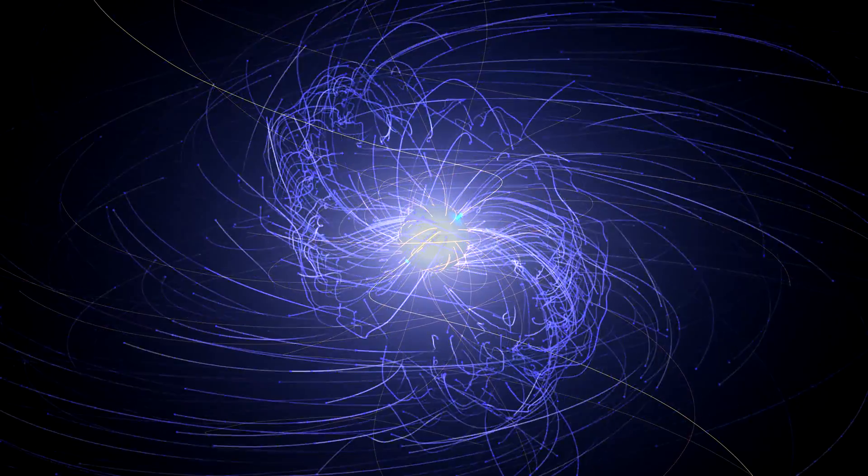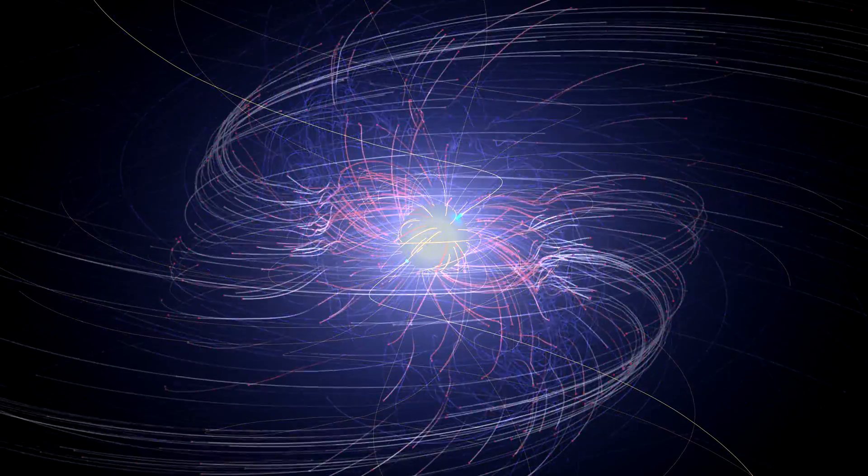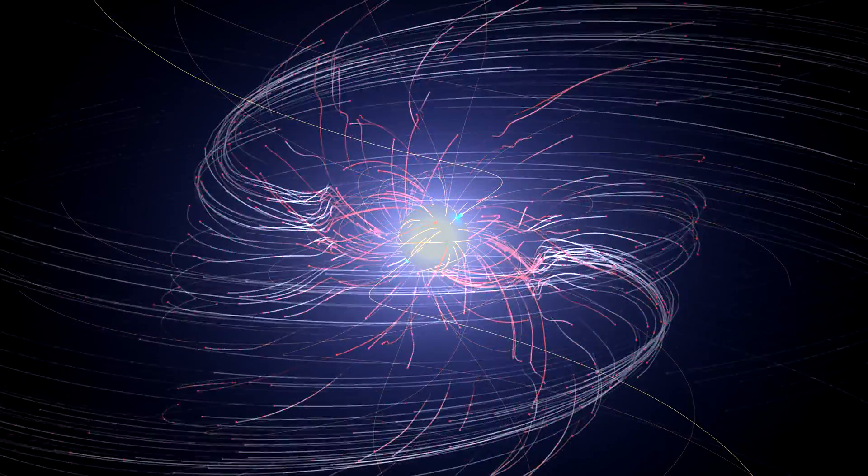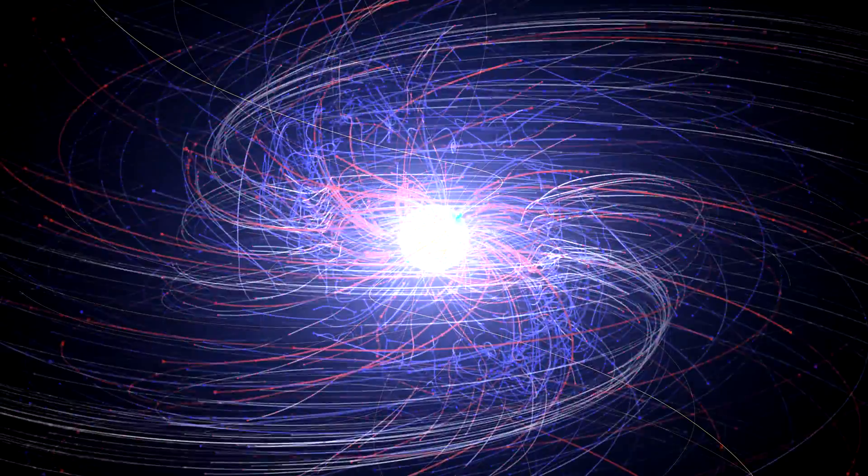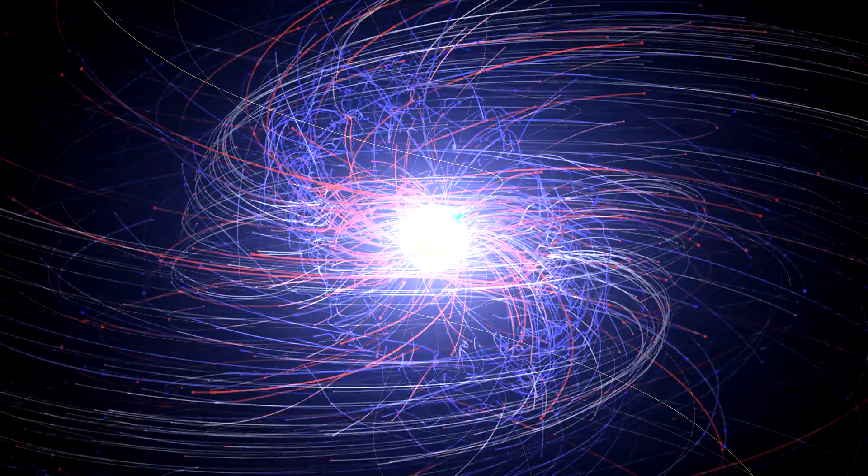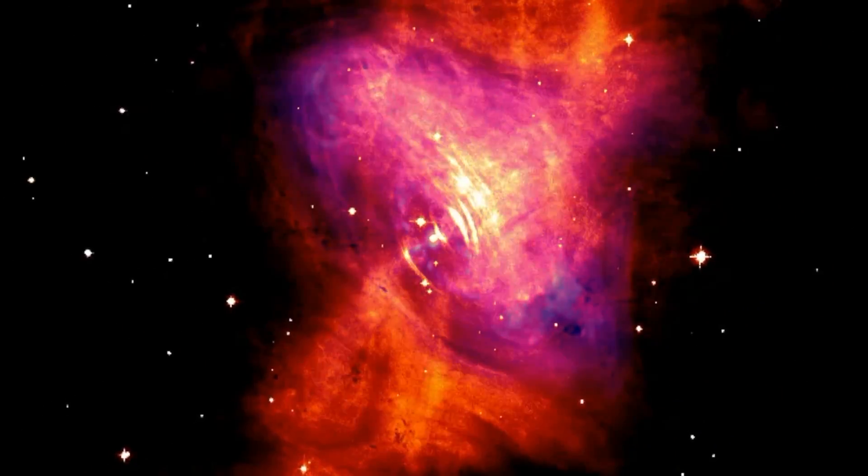Electrons tend to race outward from the magnetic poles. Positrons mostly flow out at lower latitudes along a relatively thin structure called the current sheet. Ultimately, these outflows lead to the formation of a powerful wind that extends far from the pulsar.